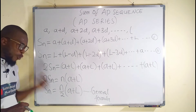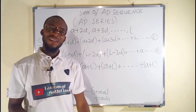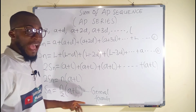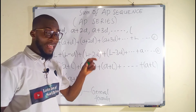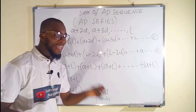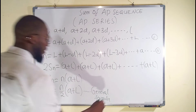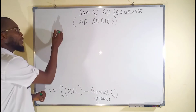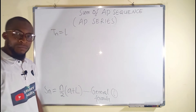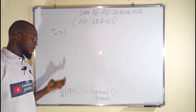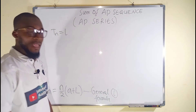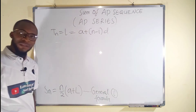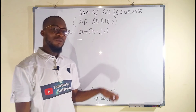We can derive a second formula from this general formula, because we know how to find L. L is just a term in the sequence, denoted by Tn. The general formula for any term is Tn = a + (n-1)d. So the last term L equals a + (n-1)d. This is the formula used to find every single term in an arithmetic sequence.